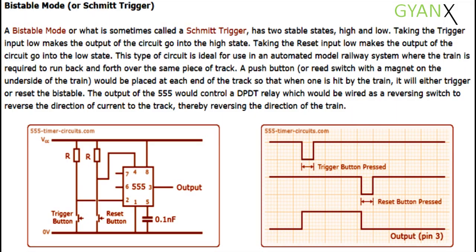A push button or reed switch, which is used with a magnet on the underside of the train, would be placed at each end of the track so that when one is hit by the train it will either trigger or reset the bistable. The output of the 555 would control a DPDT relay, which would be wired as a reversing switch to reverse the direction of the current to the track, thereby reversing the direction.